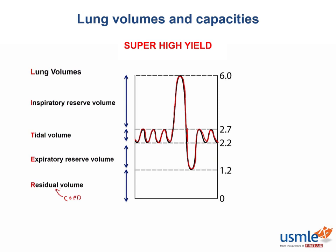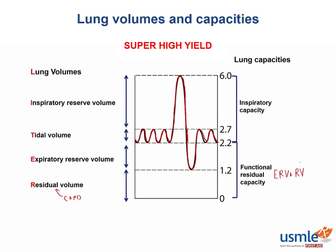A capacity is made up of multiple lung volumes. The inspiratory capacity is the tidal volume plus the inspiratory reserve volume — it reflects the total volume of air that can be inspired. Functional residual capacity is the volume of air in the lungs after normal expiration. So which volumes comprise the FRC? That would be the expiratory reserve volume and the RV.